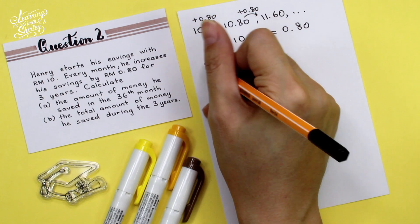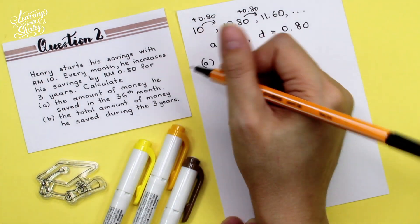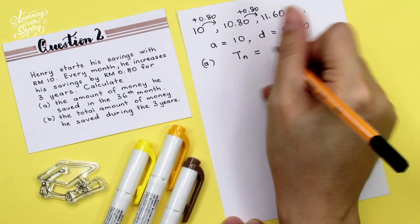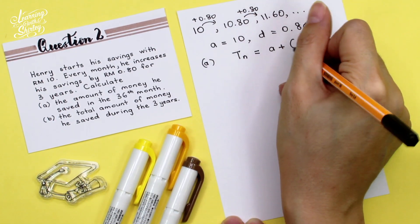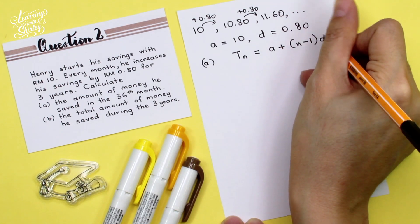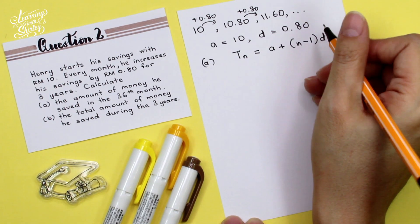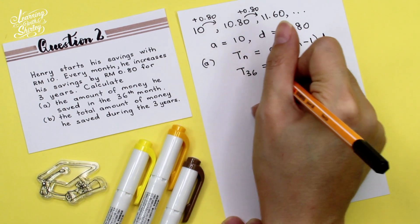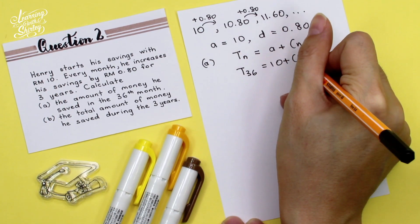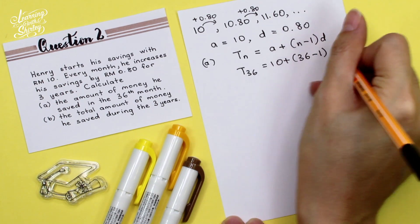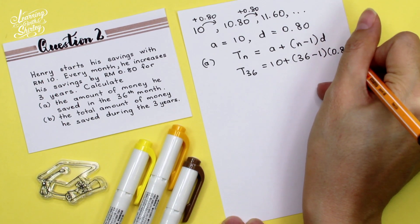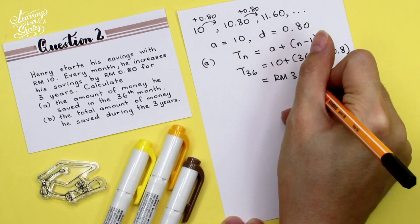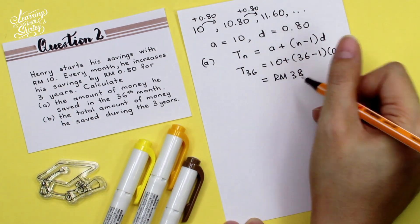For part A, to find the amount of money he saved in the 36th month, we use the formula TN = A + (N − 1)D. We substitute the values: T36 = 10 + (36 − 1) × 0.8. Therefore, we get RM38 in the 36th month.